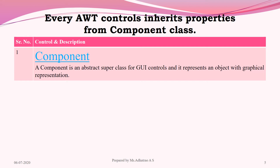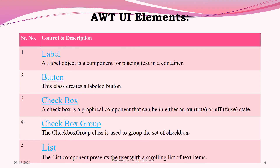What is a Component? A component is an abstract superclass for GUI controls and represents an object with graphical representation. The AWT UI elements include: Label — an object of a component for placing text in a container; Button — a class that creates a labeled button; and Checkbox — a graphical component that can be in either an ON or OFF state, meaning true or false.